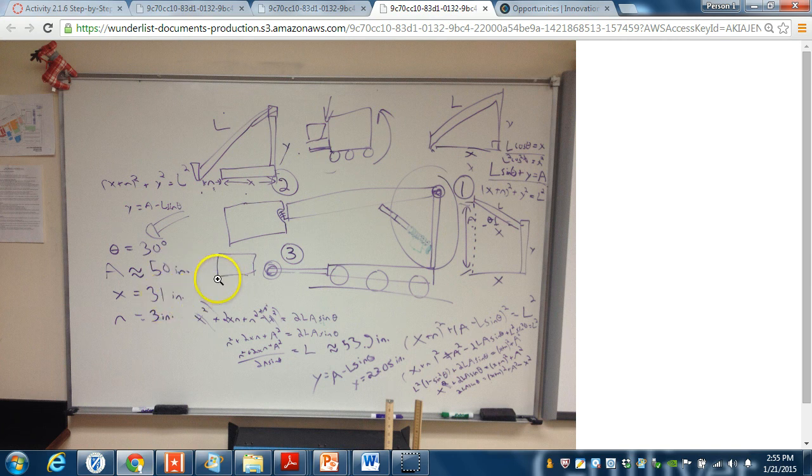The approximate height that we'll be able to lift the totes in the end, which is A over here, will be approximately 50 inches, which will allow it to stack on top of a stack of four totes. That's the goal of the robot as of now.